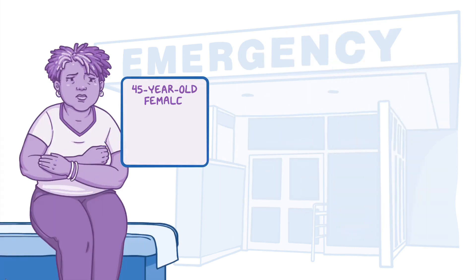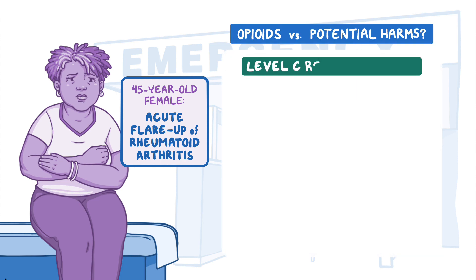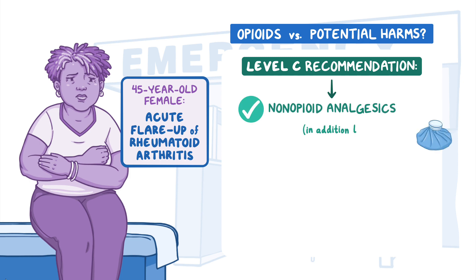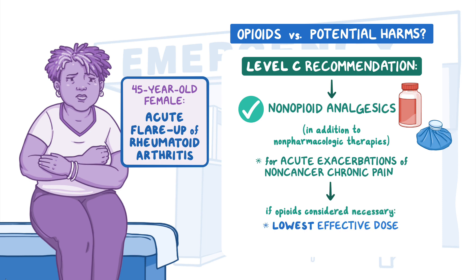A 45-year-old female presents to the ED with severe pain from an acute flare-up of rheumatoid arthritis. Do the benefits of opioids outweigh potential harms? The Level C recommendation is to prescribe non-opioid analgesics in addition to non-pharmacologic therapies for acute exacerbations of non-cancer chronic pain upon discharge from the ED. If opioids are deemed appropriate, they should be prescribed at the lowest effective dose for the shortest possible time.